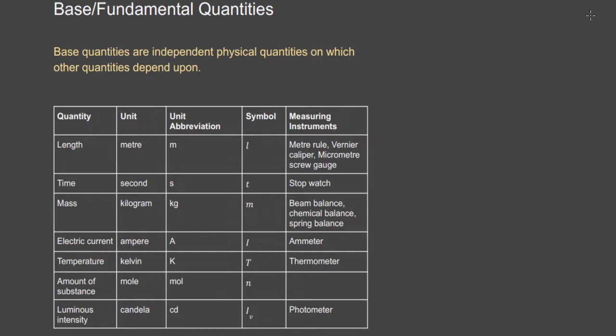Base quantities are quantities that are independent — they do not depend on other quantities; in fact, other quantities depend on them. This idea of fundamental quantities came about because physicists wanted a standard on which every other quantity would be based. They agreed on some quantities to be called base quantities and others to be called derived. There are seven base quantities.